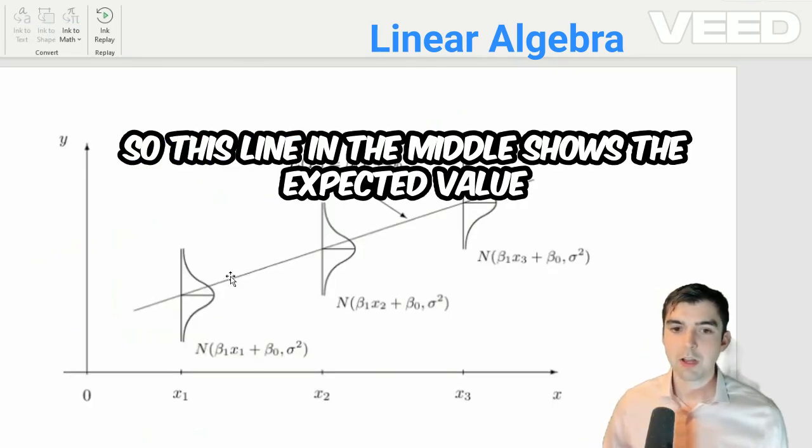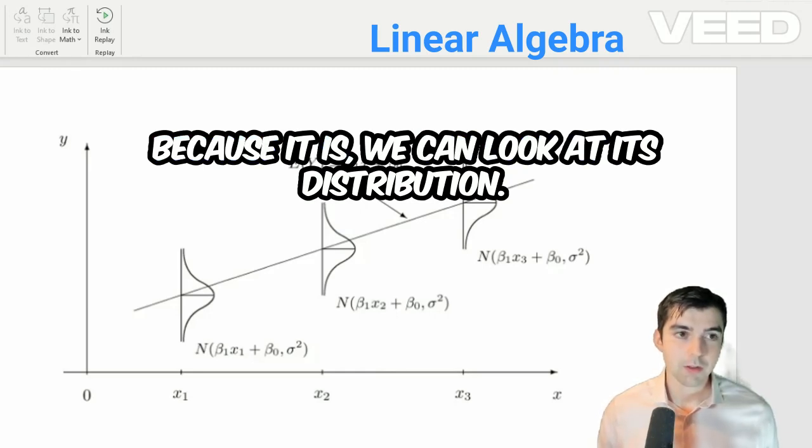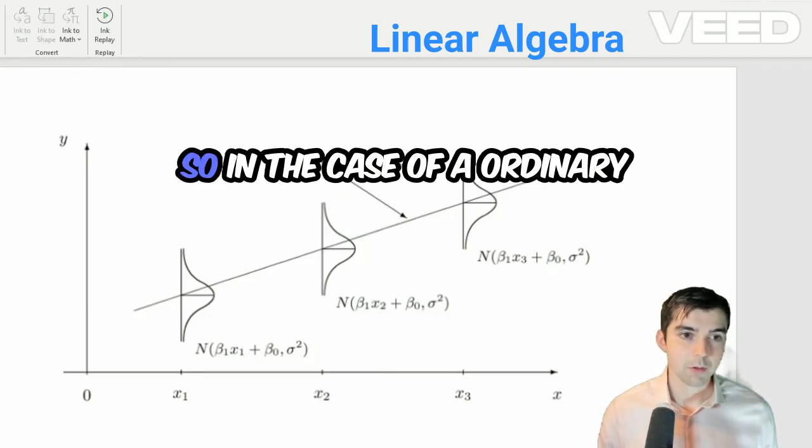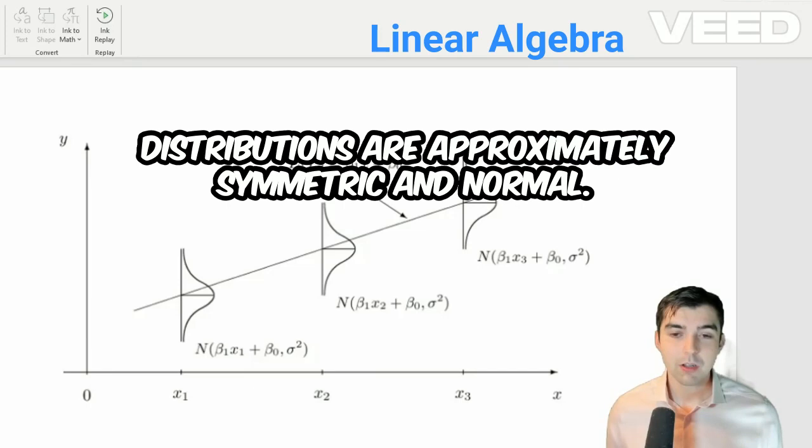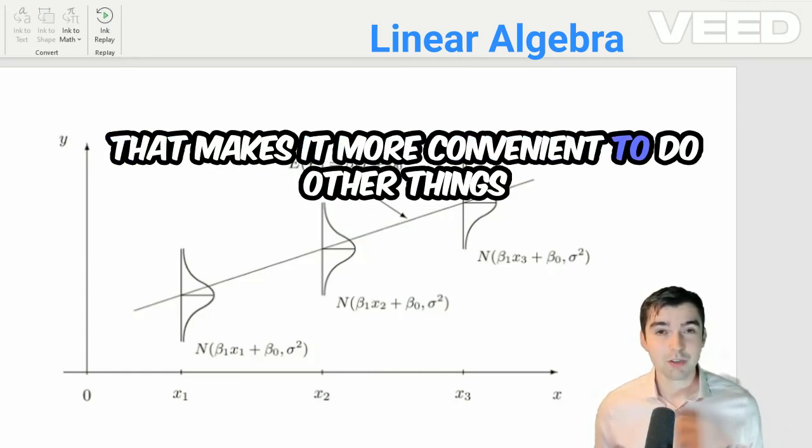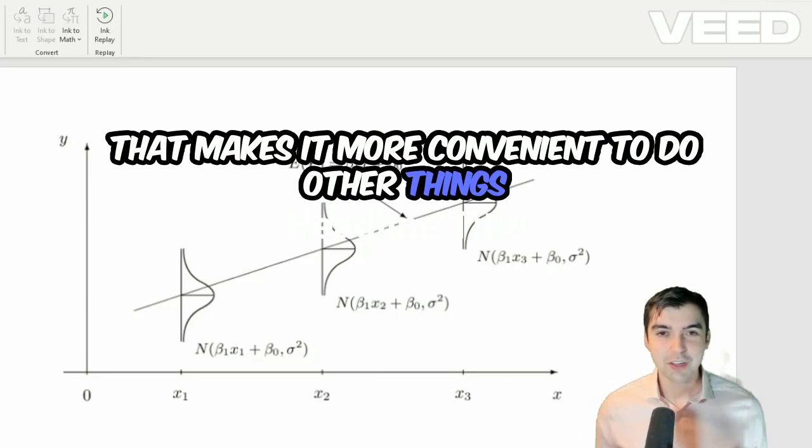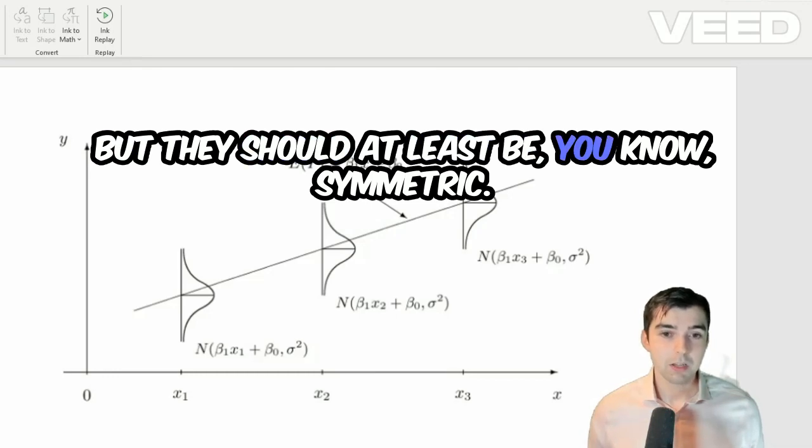So this line in the middle shows the expected value of the target. And this is actually a random variable. Because it is, we can look at its distribution. So in the case of an ordinary least squares model, we assume that these distributions are approximately symmetric and normal. Now they don't actually have to be normal, but that makes it more convenient to do other things like hypothesis testing and creating confidence intervals. But they should at least be symmetric.